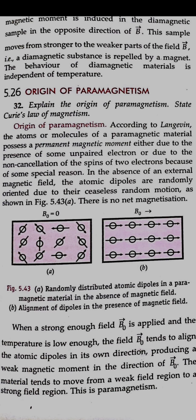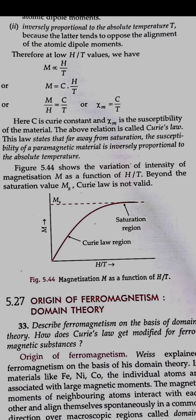Curie gave a relation: the intensity of magnetization M upon the magnetic field intensity H is proportional to C upon T, where C is Curie's constant. So chi_m (magnetic susceptibility) equals C divided by T. This means the susceptibility of a paramagnetic material is inversely proportional to its temperature. Curie's law holds until the atomic dipoles are aligned in the direction of the magnetic field; after that the saturation region comes because magnetization reaches its maximum value.